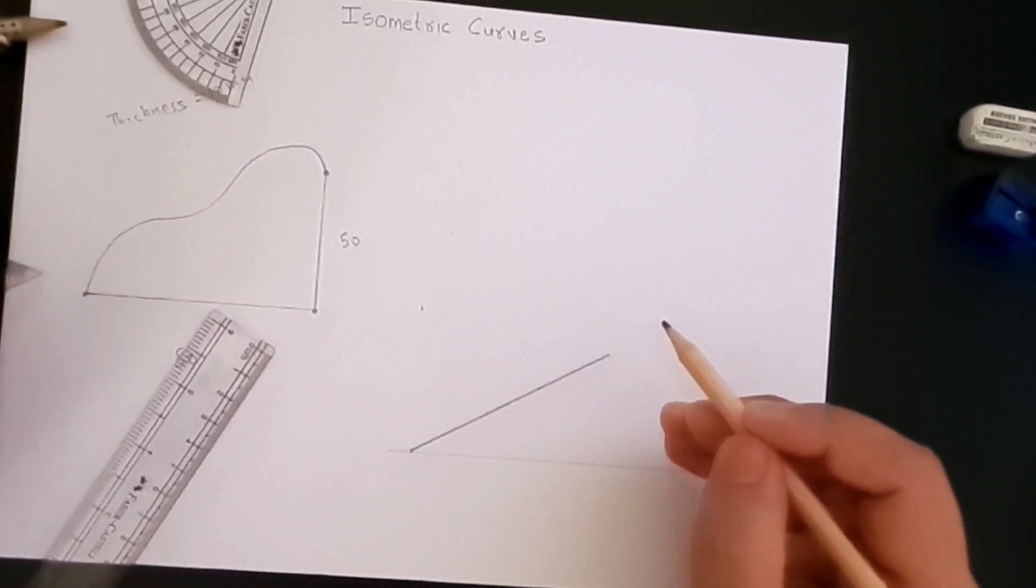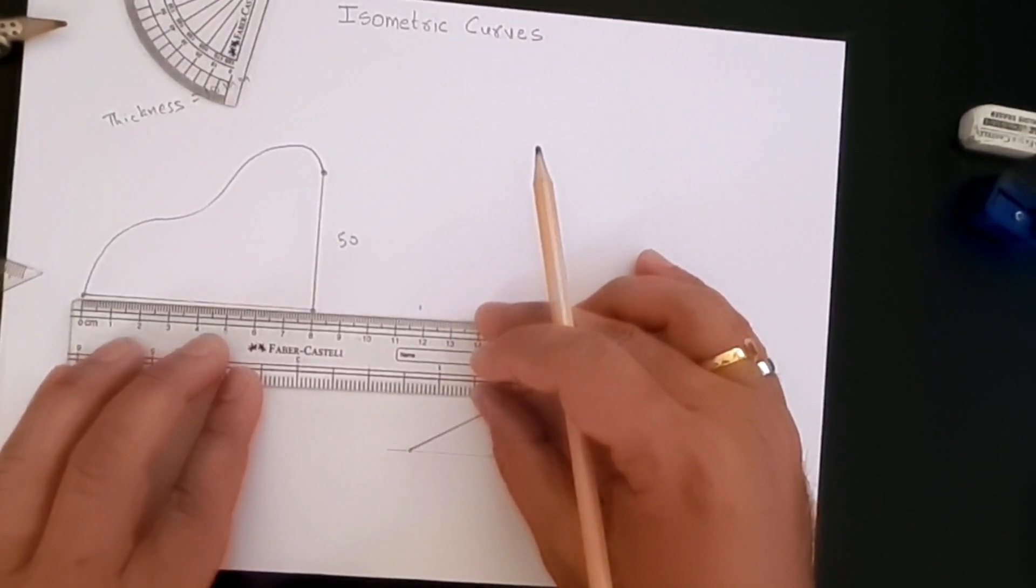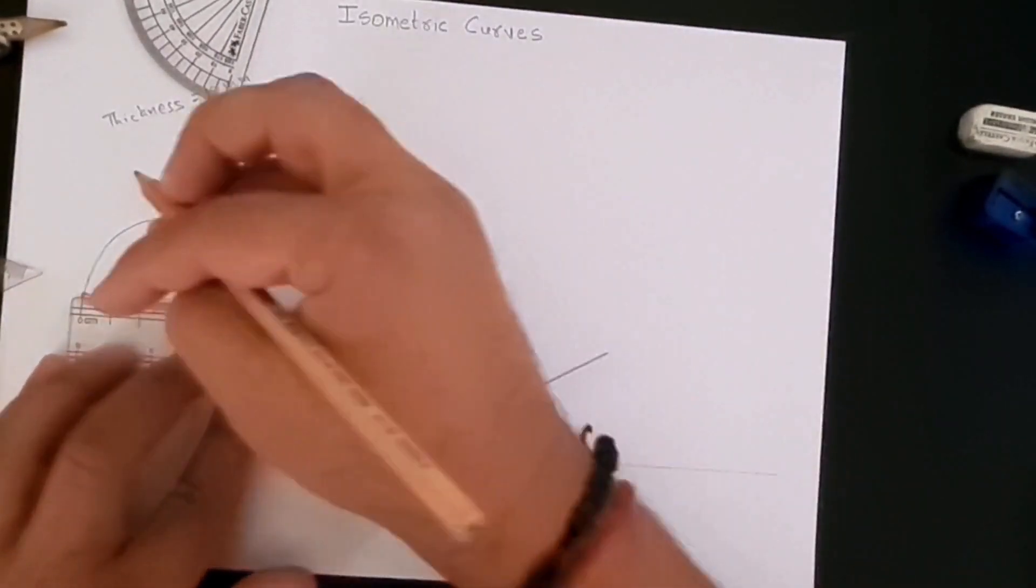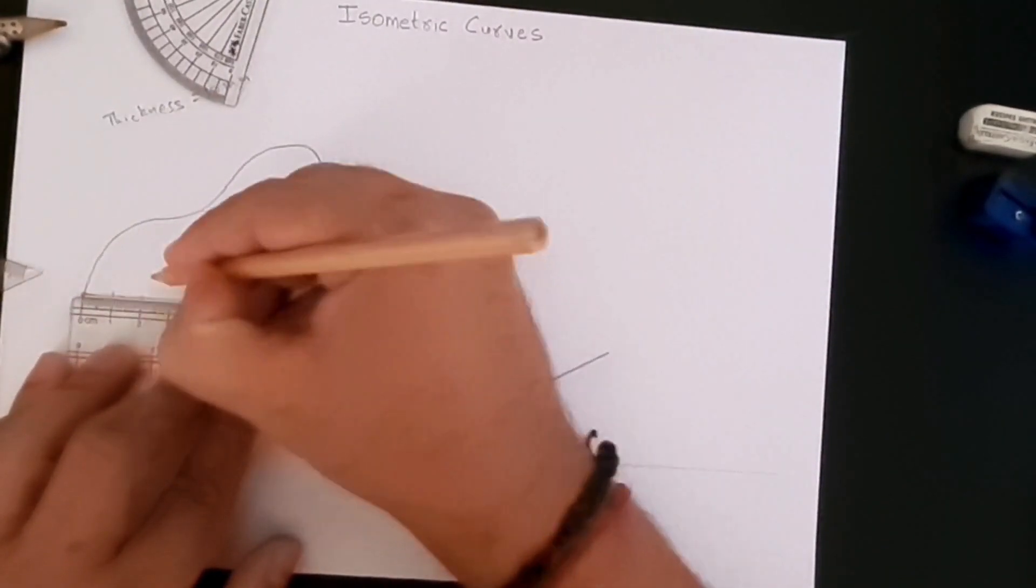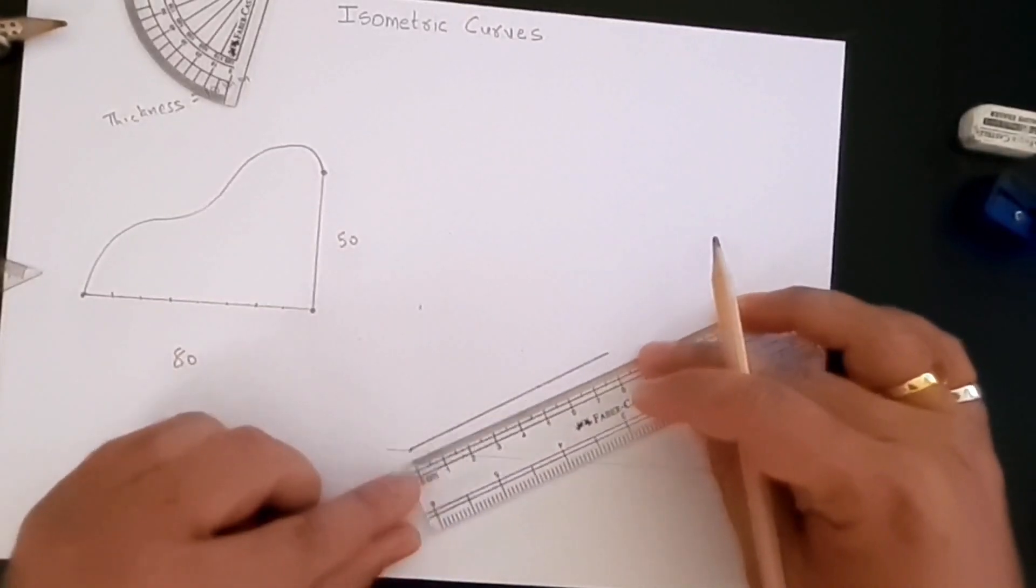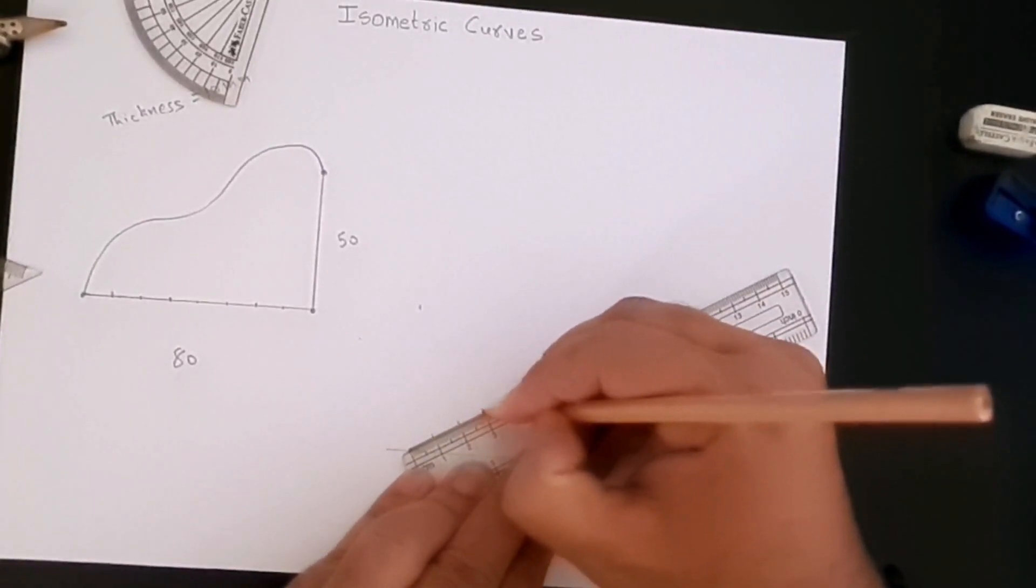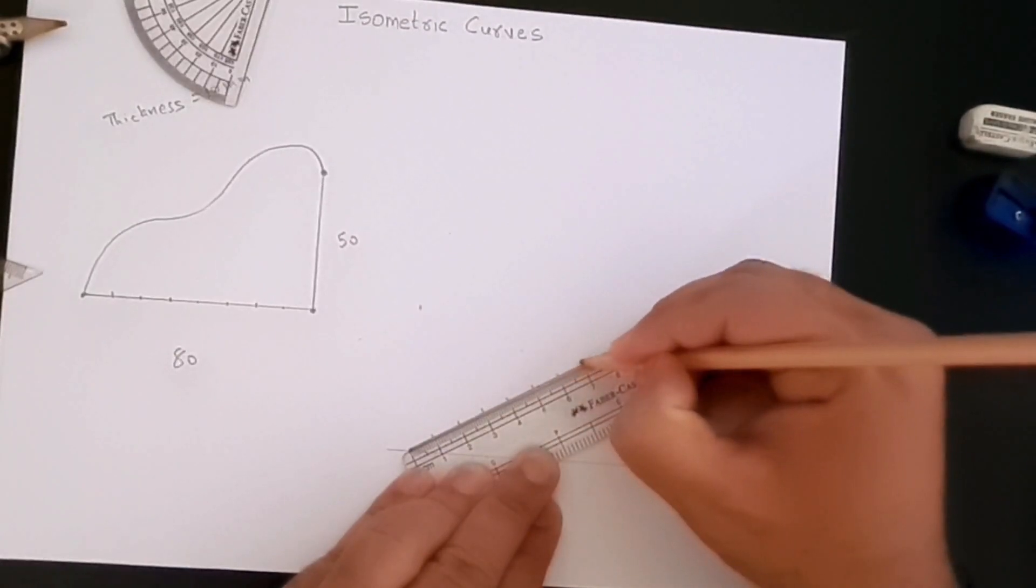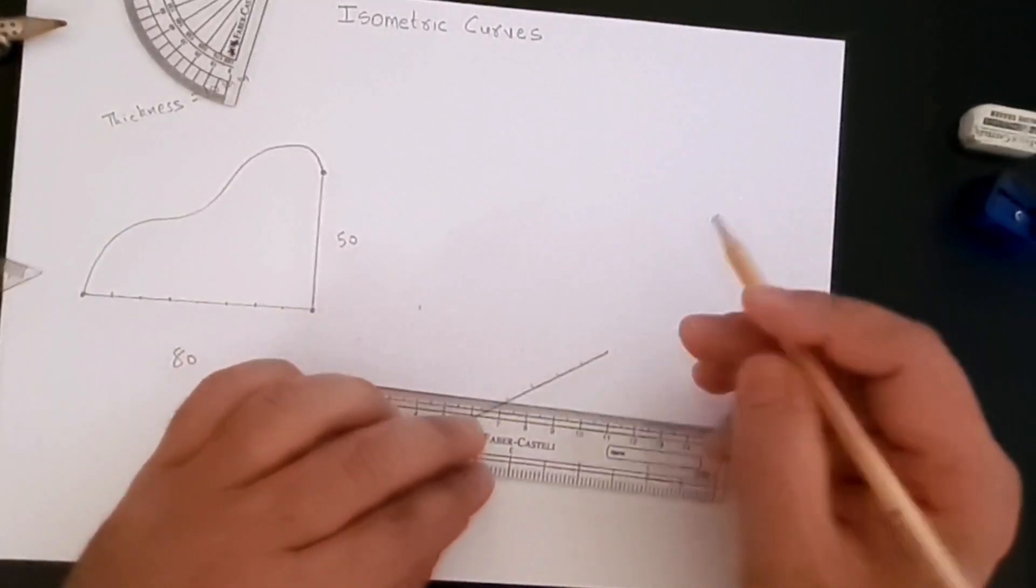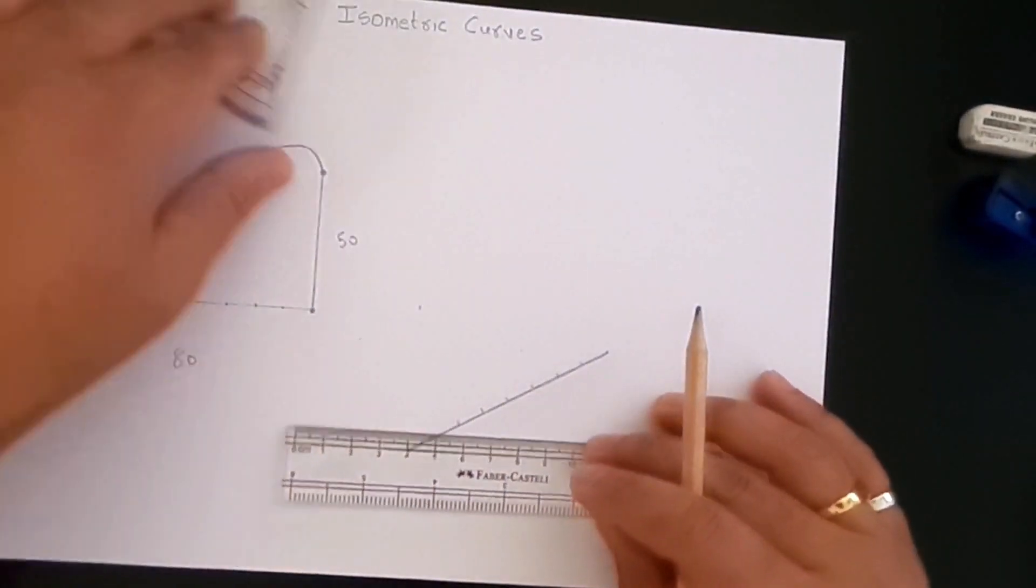Now as we did with the circle, we can divide this 80 into eight equal parts. We can create eight equal parts or unequal parts; it's entirely up to you. I just like to create equal parts so that it's easy to remember. Let's say one, two, three, four, five, six, seven, and that's the eighth part. Here we'll also create eight equal parts: one, two, three, four, five, six, seven, and this is eight.